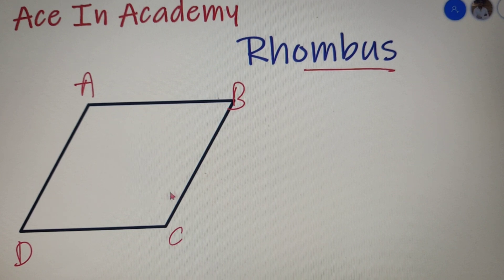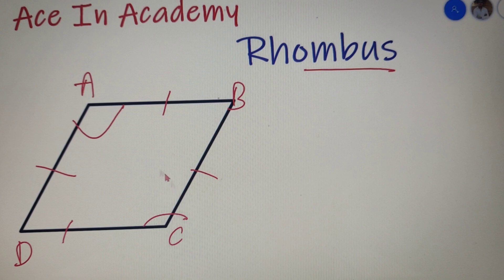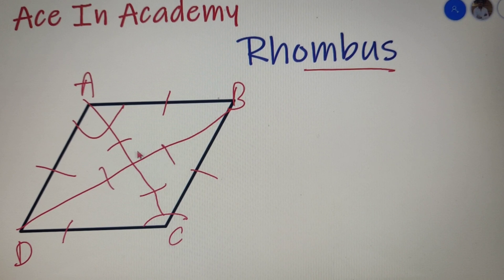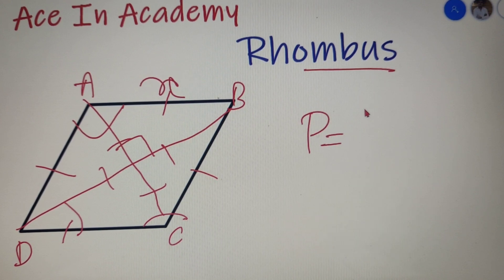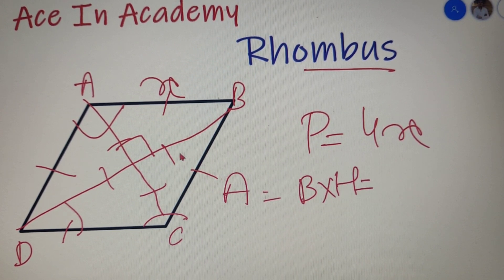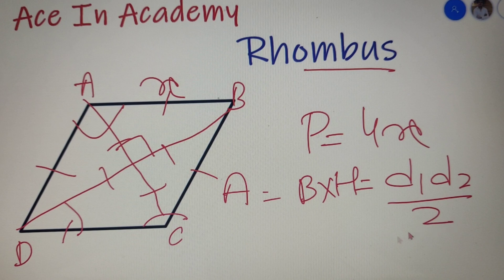Let's do a quick summary of all the properties discussed about the rhombus. All the sides of a rhombus are equal. The opposite angles of a rhombus are equal. The diagonals of a rhombus are not equal, and the diagonals bisect each other at 90 degrees. The diagonals also bisect the angles at the vertices, and the triangles formed by the diagonals — both small and large — are congruent to each other. The perimeter is equal to 4X, the area equals base times height, or D1 times D2 divided by 2.